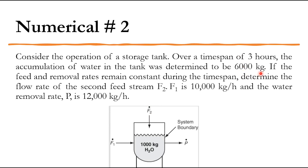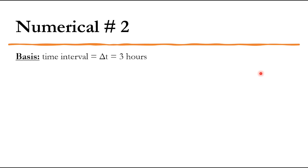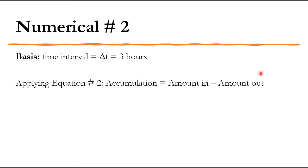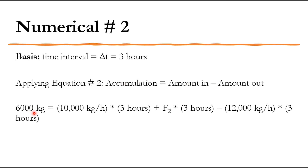We can convert this system to kg, and the answer will remain the same. The basis time interval delta T equals three hours. Applying equation two: accumulation equals amount in minus amount out. Accumulation is 6,000 kg. Converting flow rates to kg: 10,000 kg/hr × 3 hr + F2 × 3 hr − 12,000 kg/hr × 3 hr = 6,000 kg. Solving this, F2 equals 4,000 kg/hr.